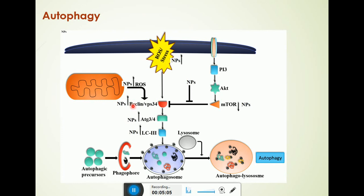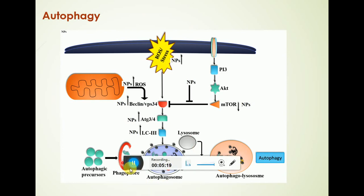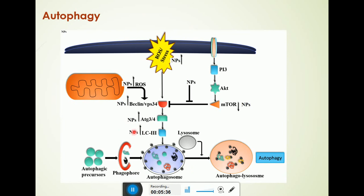A variety of proteins such as Beclin, VPS34, ATG34, and LC3 have been known to initiate autophagosome and lysosome-mediated autophagic cell death. Natural products are known to upregulate these proteins in cancer, which further leads to autophagic cell death.